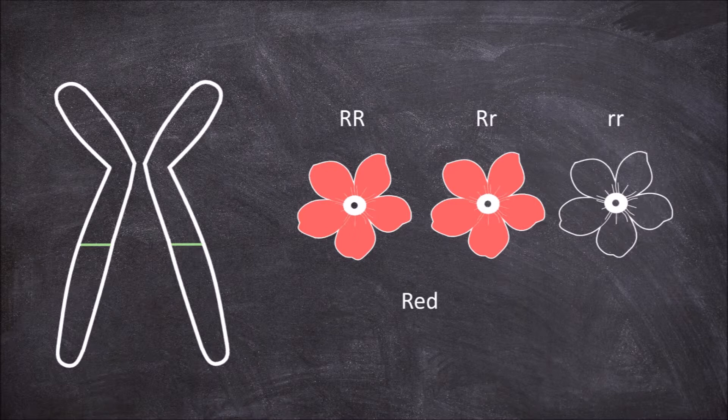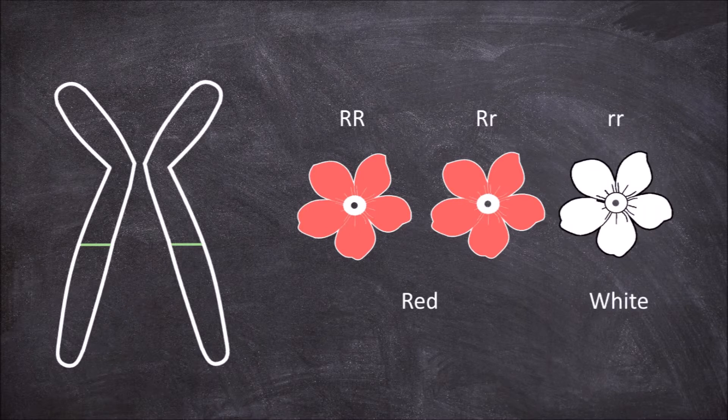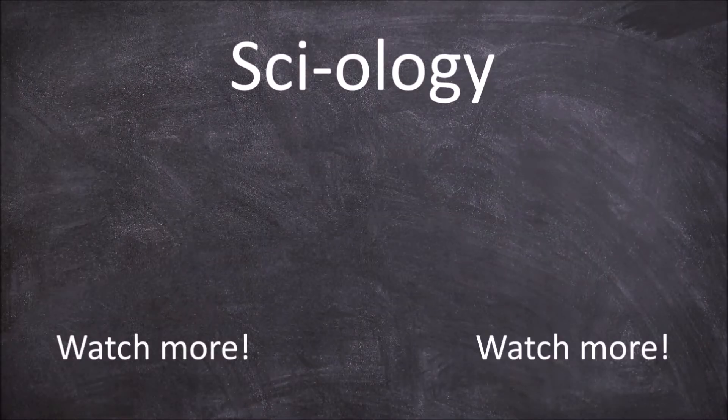The genotype little r little r, on the other hand, only has the genes for white flowers, which means it expresses itself phenotypically as having white flowers.